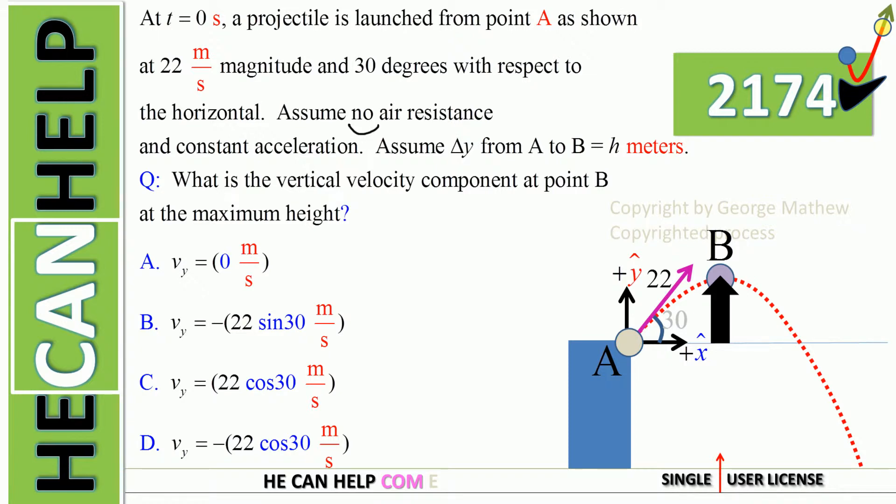Assume no air resistance and constant acceleration. Assume delta y from A to B equal to h meters.